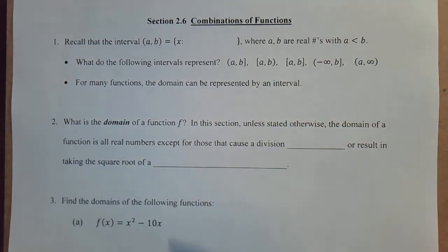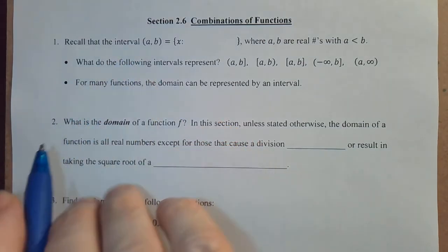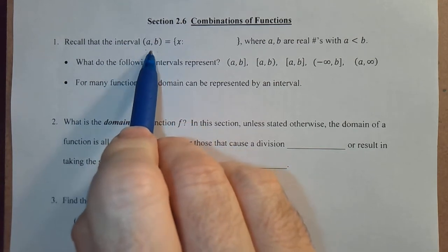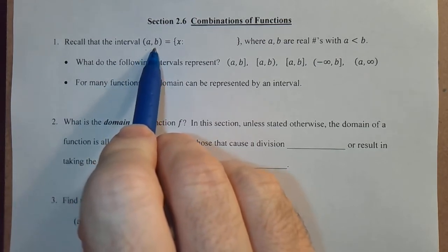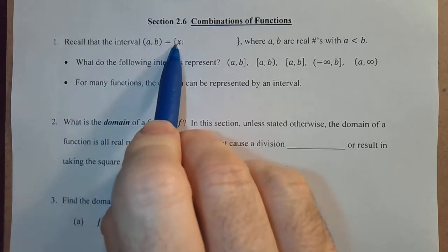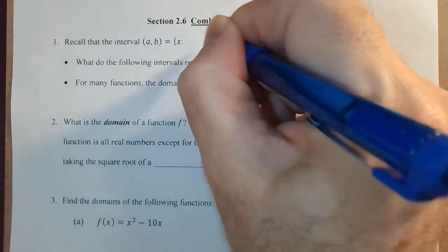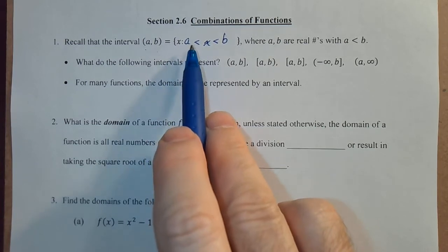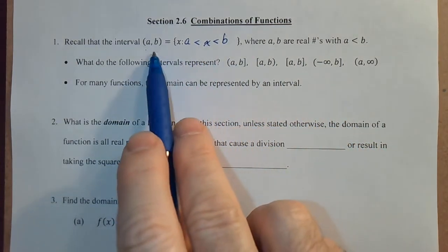We're going to make sure we can find the domain of a given function. First let's look at intervals, because frequently the domain of a function can be represented using an interval. Recall that an open interval — written with parentheses — from a to b (where a < b) is defined as all real numbers strictly between a and b: the set of all x such that a < x < b.